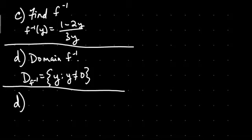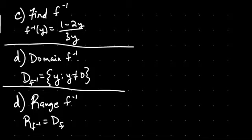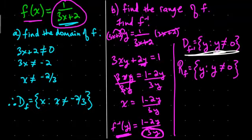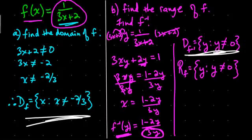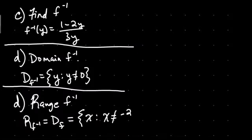Part D is going to be. Part D says find the range of f inverse. Well, the range of f inverse equals the domain of f, which equals x such that, what was the domain of f here? x is not equal to two-thirds. Negative two-thirds, right? Negative two-thirds. And that finishes the problem.